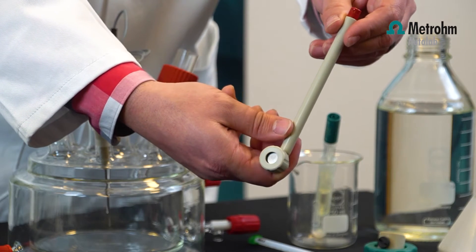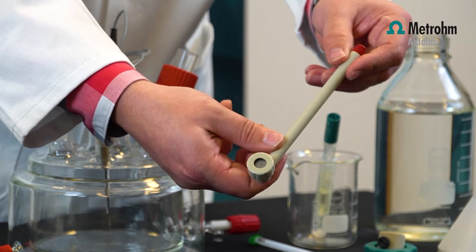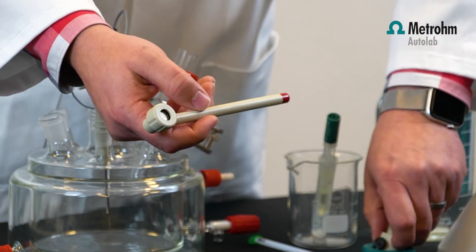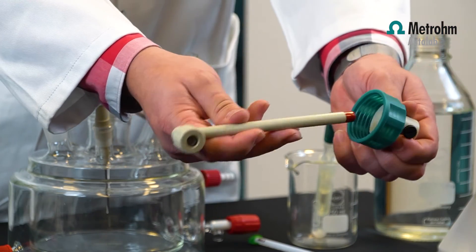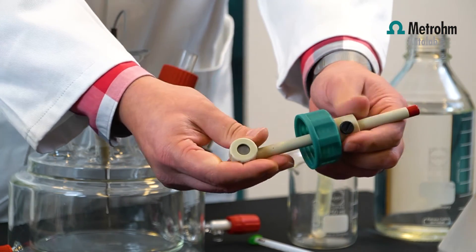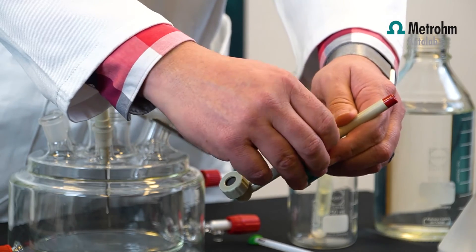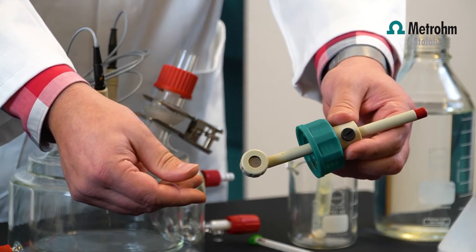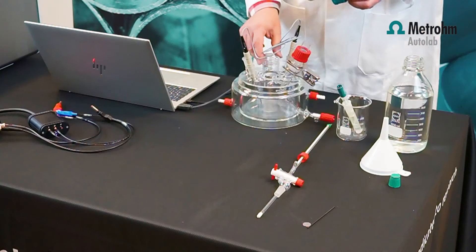Now you have the sample prepared. This is your sample which you're going to use. You connect this to the top cover and you can tighten the shaft with this ring.